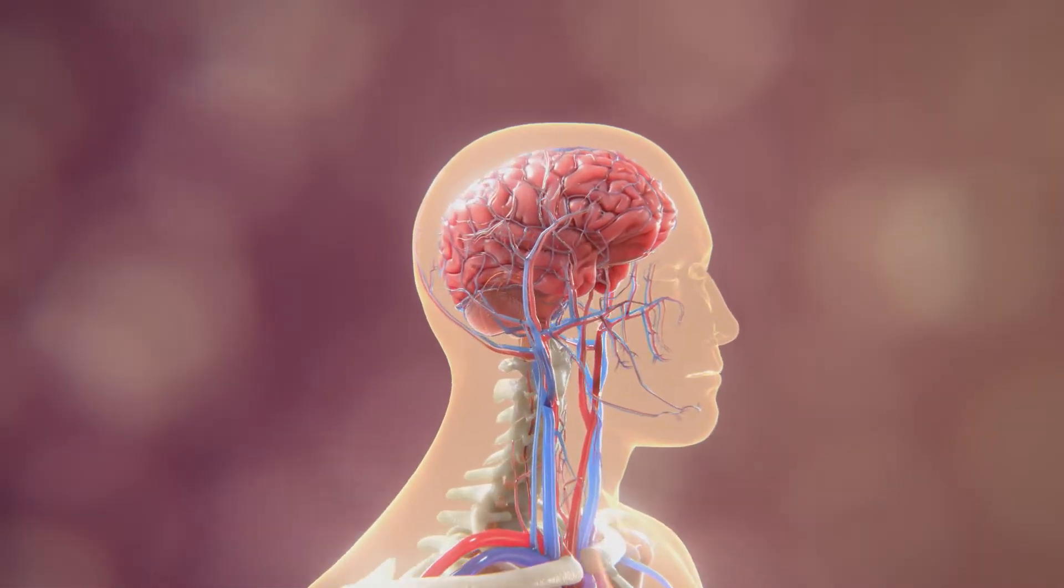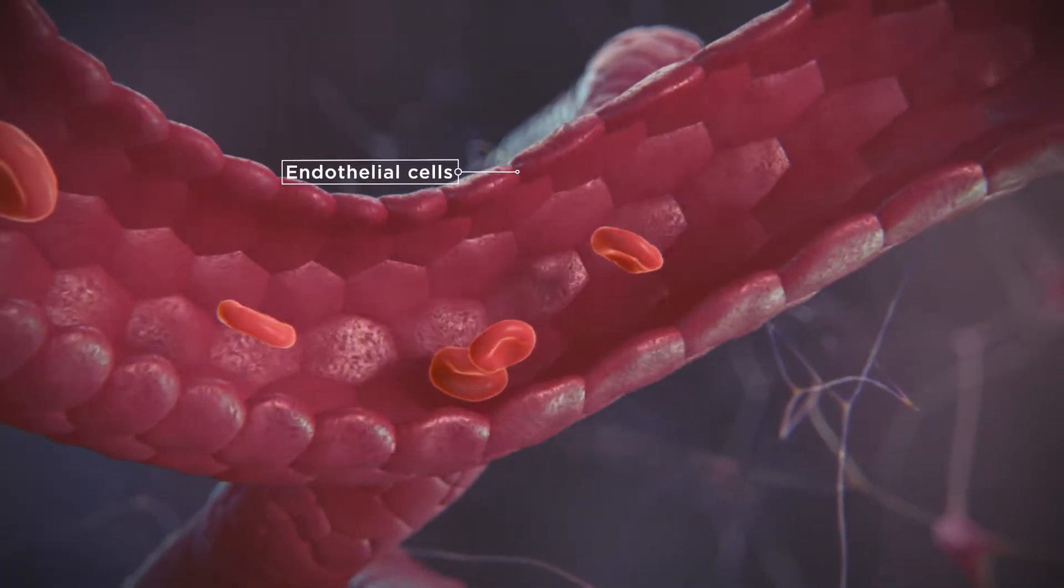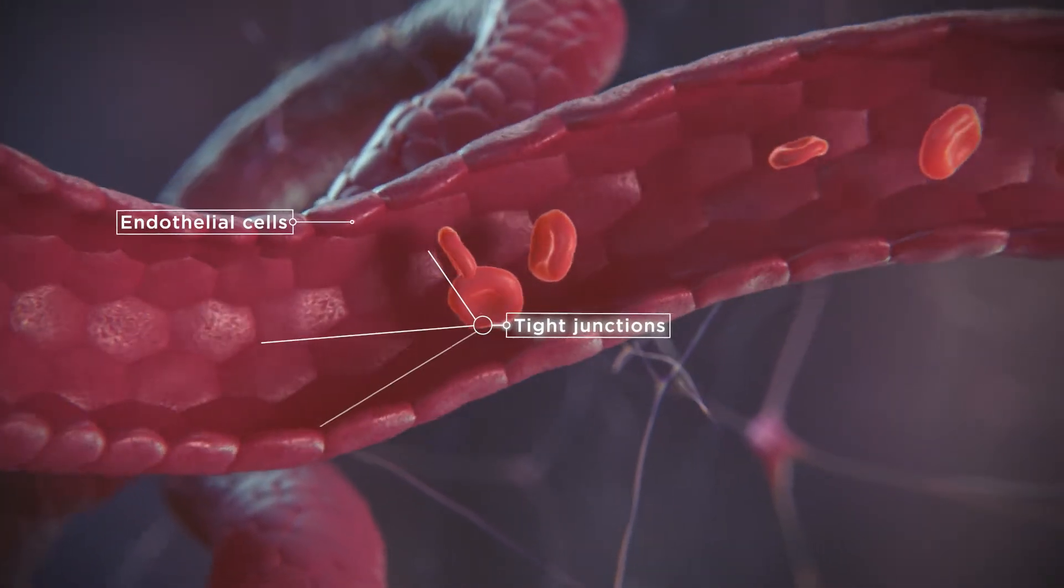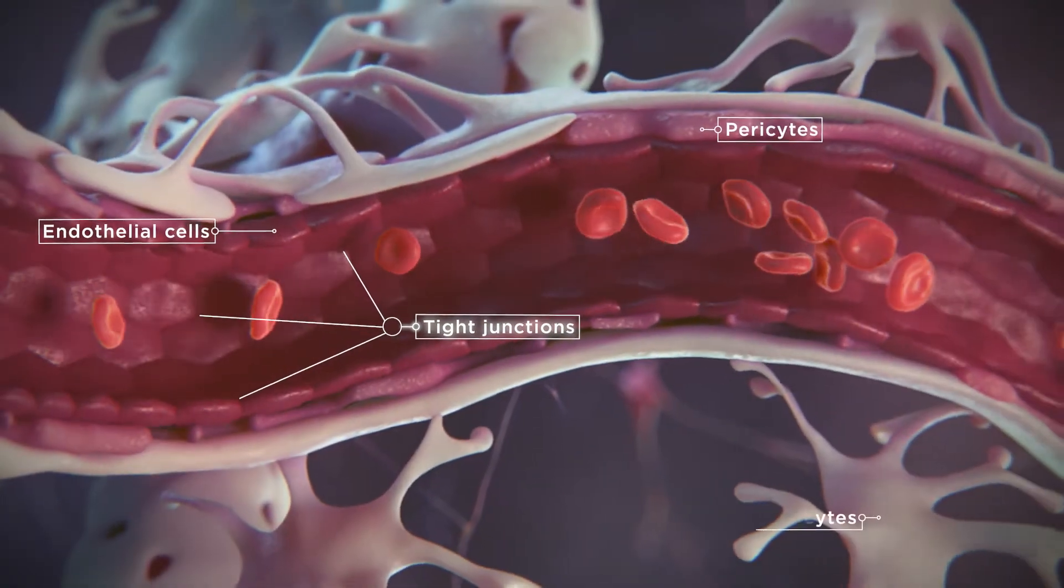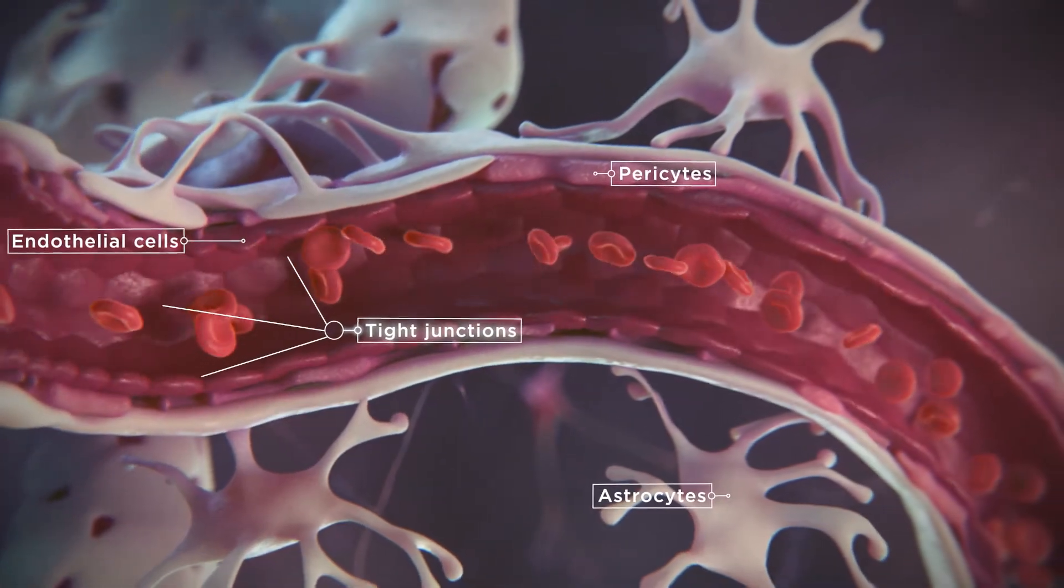Capillaries are also found in the brain. However, their structure is very different. There are no gaps between the endothelial cells. Instead, there are specialized tight junctions. Surrounding these capillaries are pericytes and astrocytes, which regulate exchange and the formation and maintenance of the brain's blood supply.